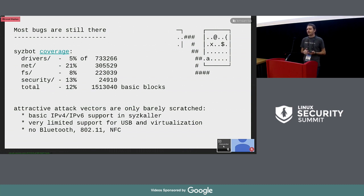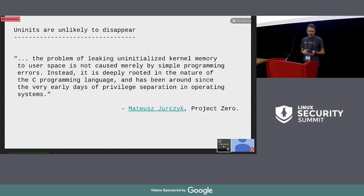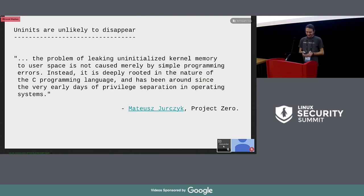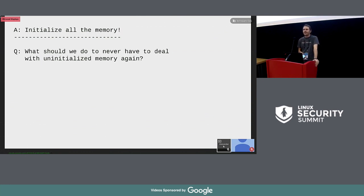I also expect around 200 bugs to be present in the remaining networking code. It's unlikely that uninitialized bugs may disappear anytime soon. Mateusz from Google Project Zero says that bugs related to information leaks are deeply rooted in the C programming language, and I believe all bugs related to uninitialized memory are deeply rooted in C. So what shall we do to never have to deal with uninitialized memory again? The answer is simple: we must initialize all the memory.